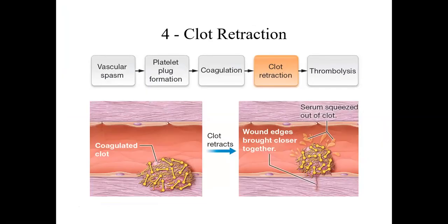Step four is clot retraction. Once the dense fibrin clot has formed, it contracts — squeezing out extra fluid back into the bloodstream. As it tightens, it pulls together the edges of the damaged tissue, making it easier for fibroblasts to build new collagen and repair the injury.